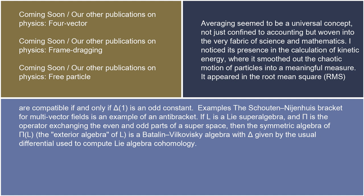Examples: the Schouten-Nijenhuis bracket for multi-vector fields is an example of an antibracket. If L is a Lie superalgebra and Π is the operator exchanging the even and odd parts of a superspace, then the symmetric algebra of ΠL (the exterior algebra of L) is a Batalin-Vilkovisky algebra with delta given by the usual differential used to compute Lie algebra cohomology.